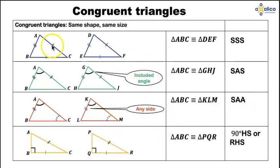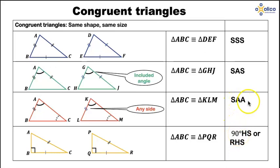So these are the four cases of congruency: you can have three sides; two sides and an angle if it is the included angle or if it is a 90-degree right angle with the hypotenuse; or a side with two angles, so long as there are corresponding pieces of information. When two triangles have three pieces of information that make them congruent, the other three pieces of information are automatically equal too.